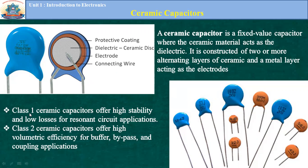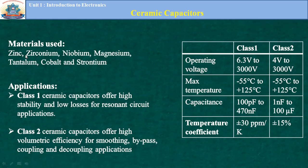There are two classes: class one and class two. Class one ceramic capacitors have high stability and low losses for resonance, and are used for buffer, bypass, and coupling applications. The materials used in ceramic capacitors include zinc, zirconium, magnesium, tantalum, cobalt, and strontium.